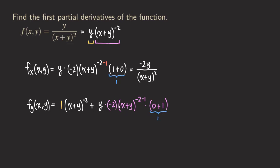So we just need to focus on simplifying the expression. The first term gives 1 over (x+y)² . The second term: we get a negative, so negative 2y, and then (x+y) to the power negative two minus one, which is negative three, giving (x+y)³ in the denominator. If you want to simplify further, you can get the common denominator and combine into a single fraction, but I'm not going to do that here.